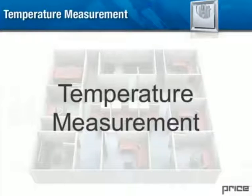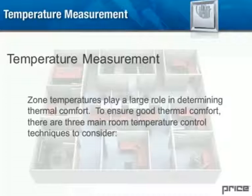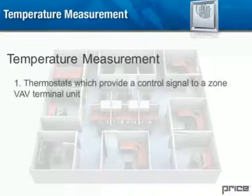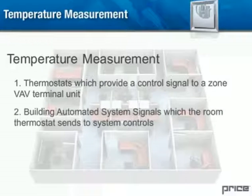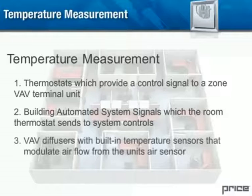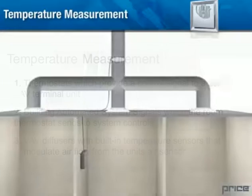Temperature measurement: Zone temperatures play a large role in determining thermal comfort. To ensure good thermal comfort, there are three main room temperature control techniques to consider: 1. Thermostats which provide a control signal to a zone VAV terminal unit. 2. Building automated system signals which the room thermostat sends to system controls. 3. VAV diffusers with built-in temperature sensors that modulate airflow from the unit's air sensor.